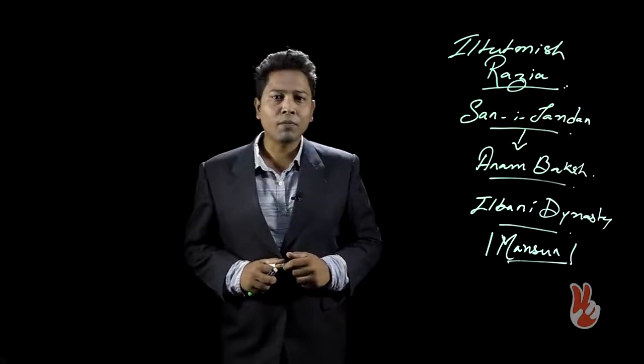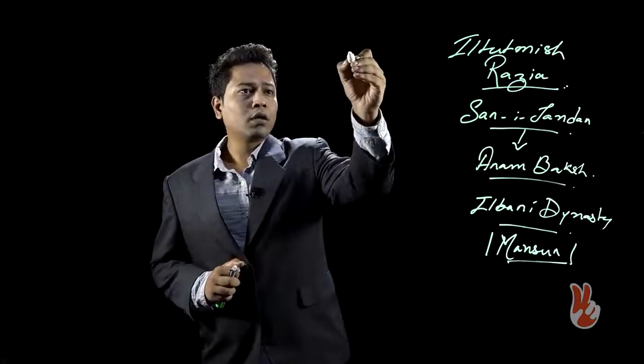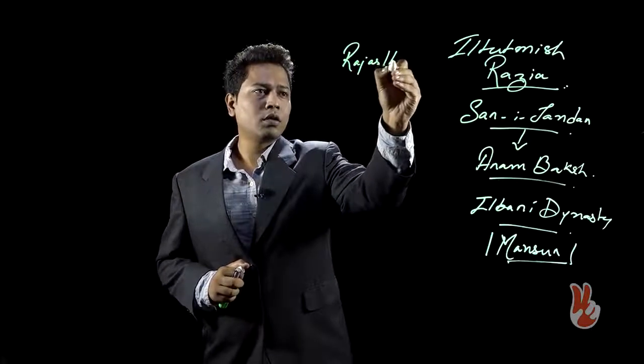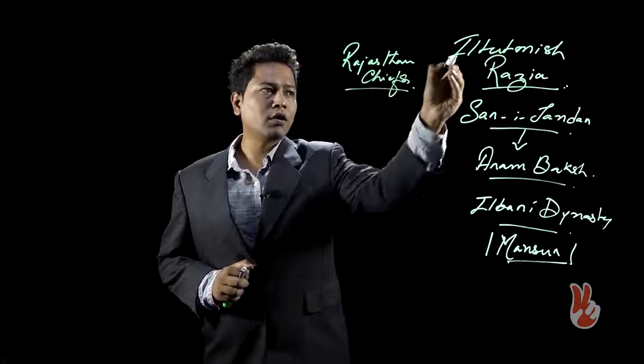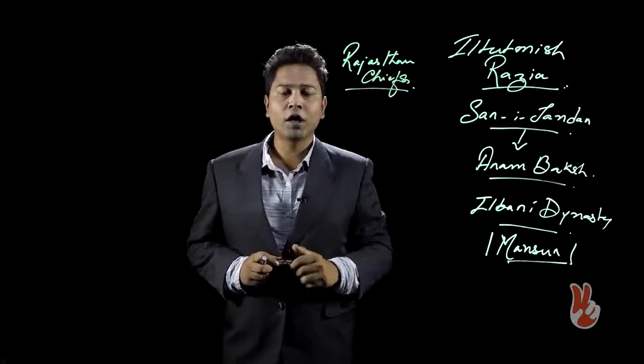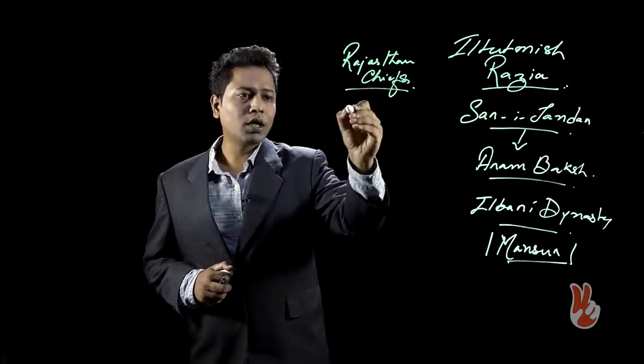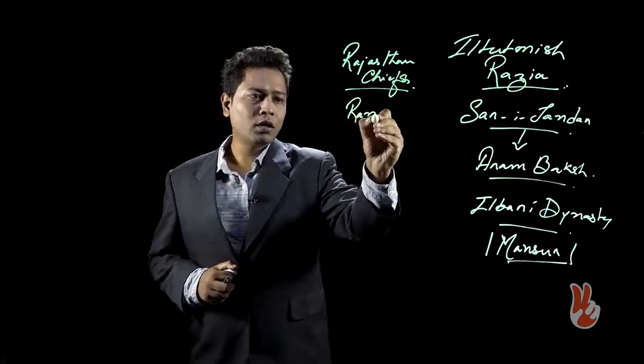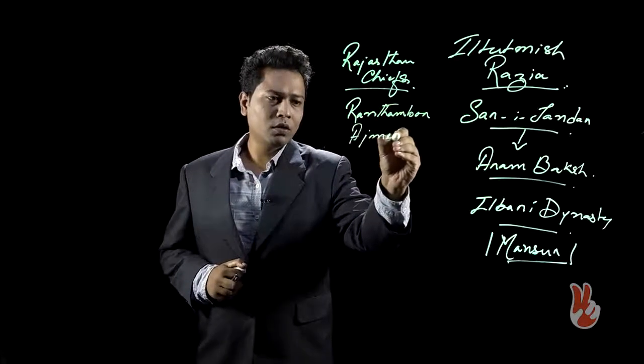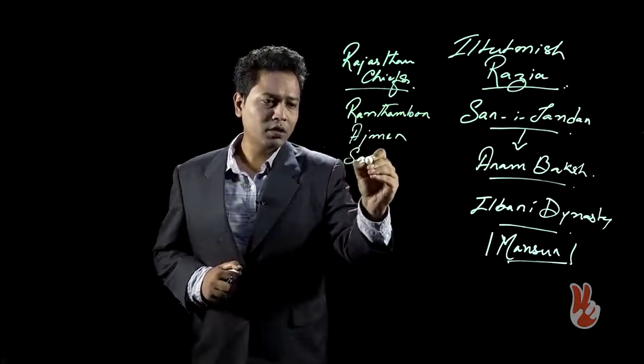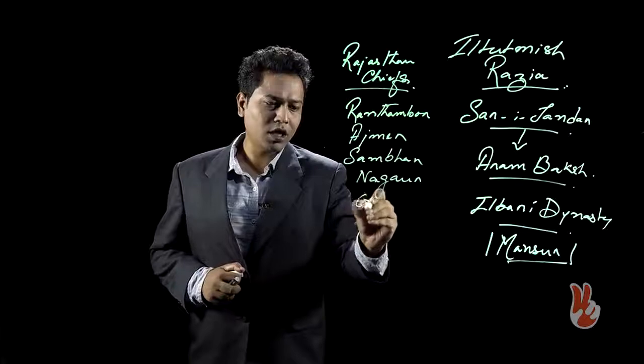From then on, he also embarked upon conquest of the Rajasthan chiefs. The Rajasthan chiefs had revolted during the reign of Iltutmish and he went out in an all-out conquest against the Rajasthan chiefs. In this process, he could take control over Ranthambore, Ajmer, Sambhar,